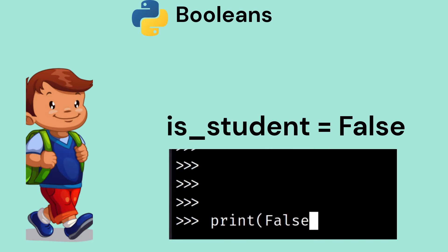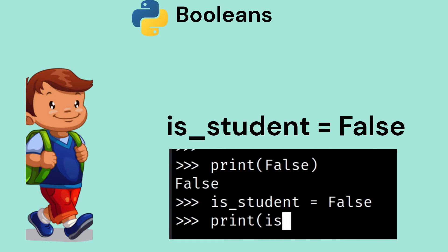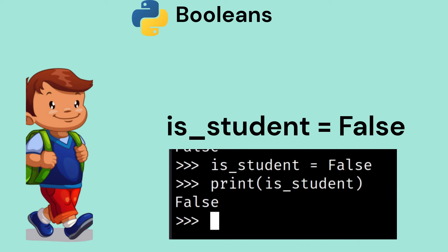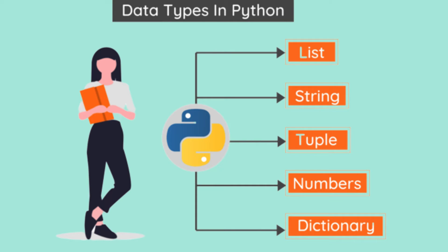For booleans, let's say we want to store someone's student status. We can do this by creating variables of data type bool, for example, student equals false.